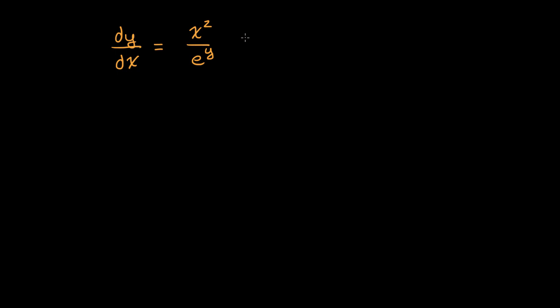So how can we do that? Well, if we multiply both sides times e to the y, then e to the y will go away right over here. So we will get rid of this y expression from the right hand side. And then we can multiply both sides by dx. So if we did that, let me move my screen over a bit to the left.